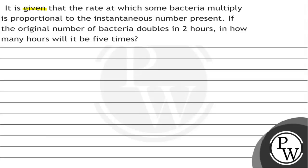Let's read the question. The question says that the rate at which some bacteria multiply is proportional to the instantaneous number present. If the original number of bacteria doubles in 2 hours, in how many hours will it be 5 times?